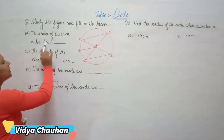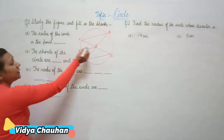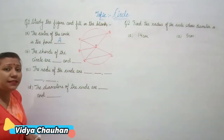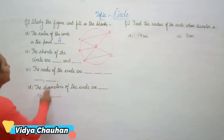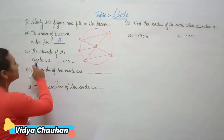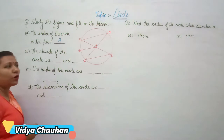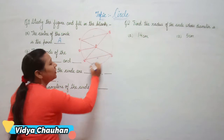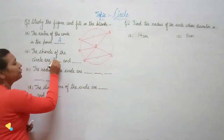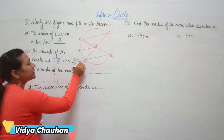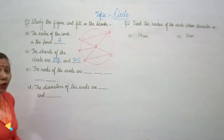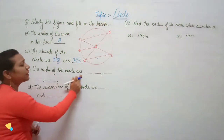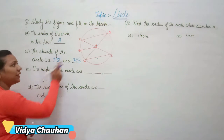The first question is: what is the center of the circle? Point A is the center of the circle. Coming to the second part: the chords of the circle are — there are two chords in this circle — PQ and RS. You have to name PQ and RS as the two chords of the circle.